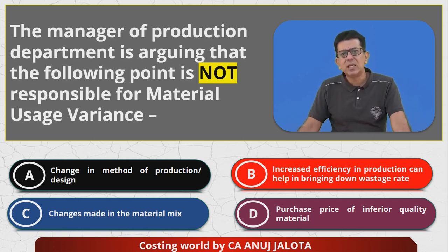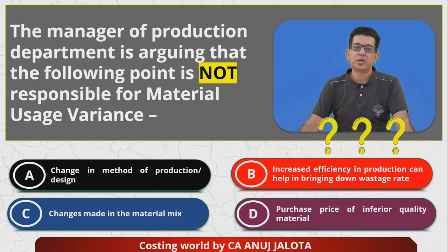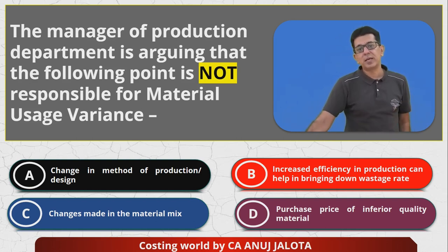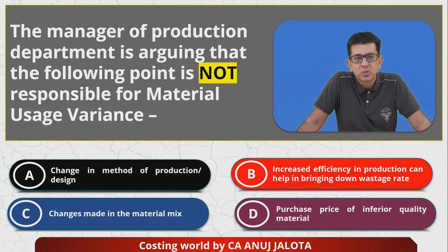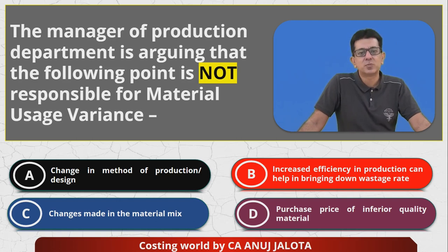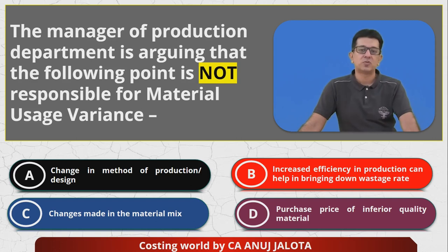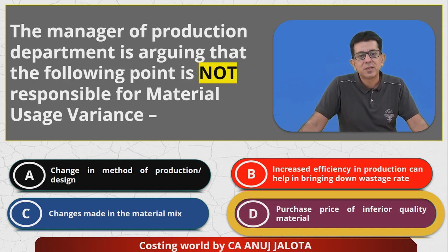That leaves option D — purchase price of inferior quality material. If there is a change in the purchase price of any material, to be honest, it does not affect usage variance — it affects material price variance. Therefore, D cannot be a reason for material usage variance. So D is the correct answer.